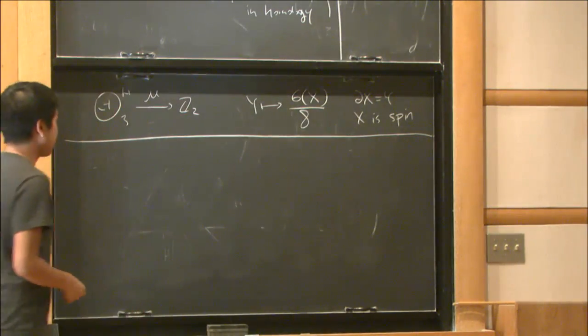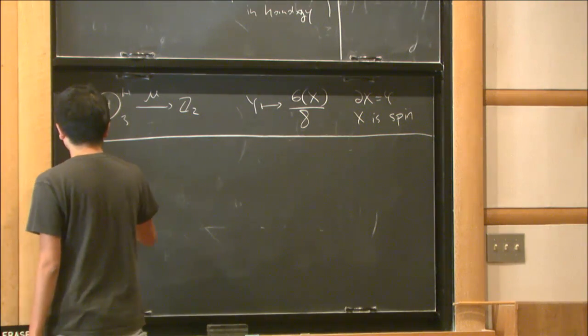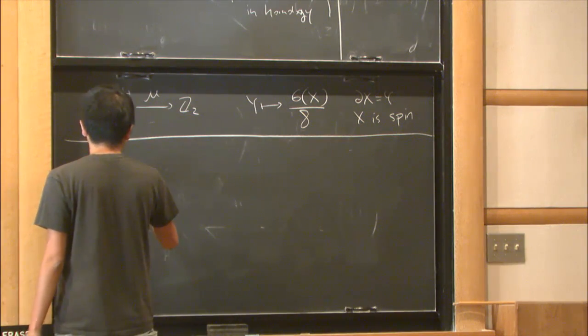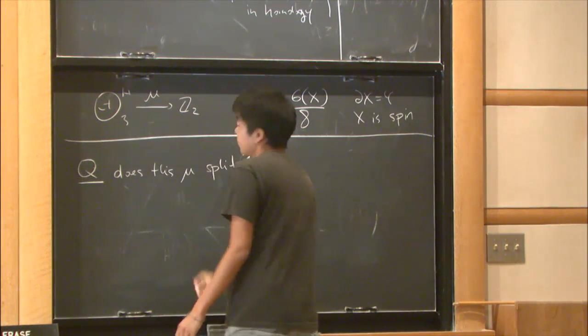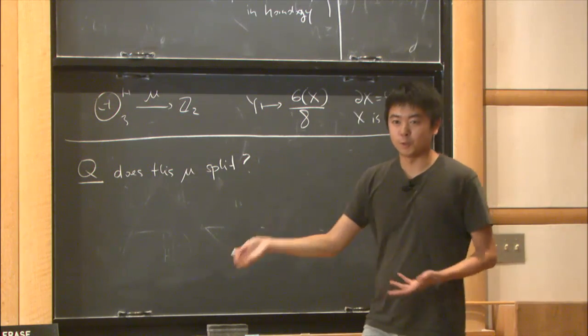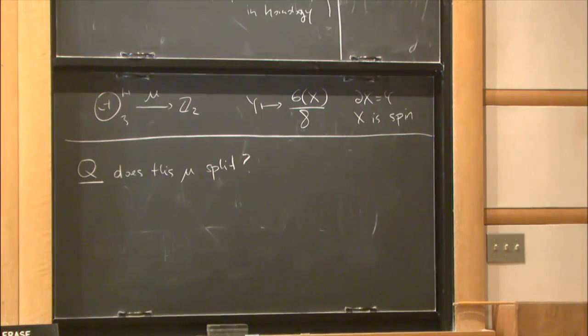Now the natural question, once you have a homomorphism, is the following: does this μ split? Well, you have a homomorphism between groups. Maybe it doesn't sound like the natural question, but the cool fact is the following.